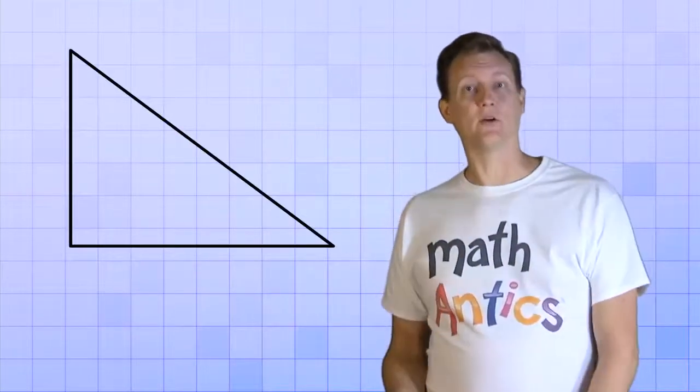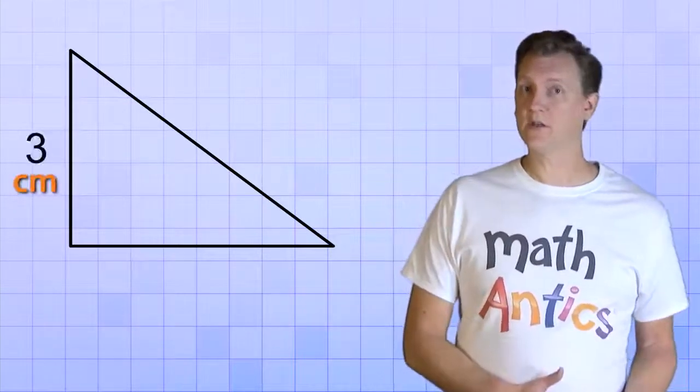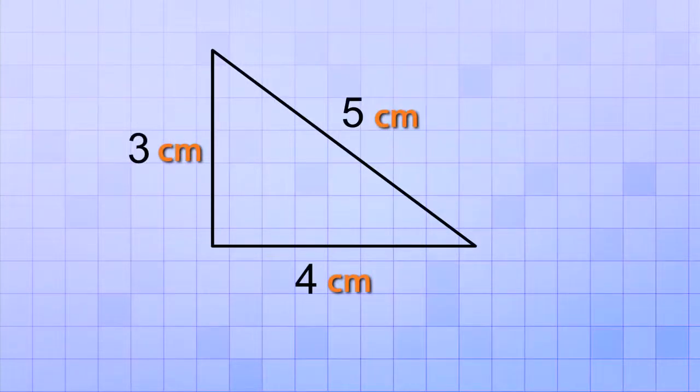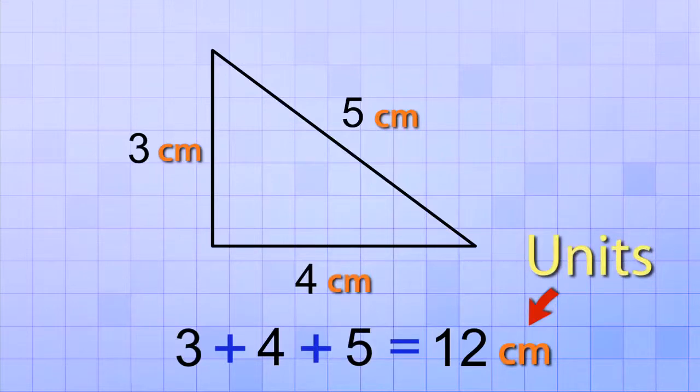The first polygon we'll try is a triangle. This triangle has three sides that are each a different length: 3 cm, 4 cm, and 5 cm. Now, to find the perimeter of the triangle, all we have to do is add up the lengths of those three sides. 3 plus 4 plus 5 equals 12. But don't forget, it's not just 12, it's 12 cm. Always remember to also put down the units of the perimeter.